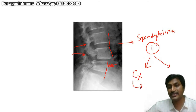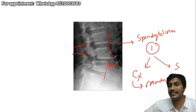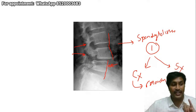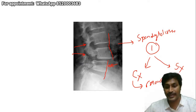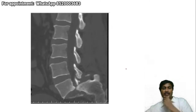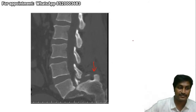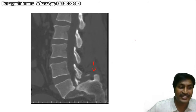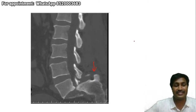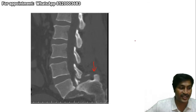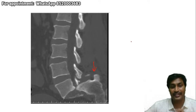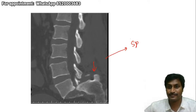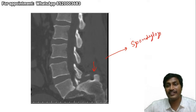For spondylolysis and spondylolisthesis grade 1, if the patient is minimally symptomatic and physiotherapy with a lumbosacral belt is working, continue conservative management for up to six months. If conservative management fails, surgery is required. Spondylolisthesis grade 1 is majority managed by physiotherapy alone. Grade 3, grade 4, and spondyloptosis will all definitely require surgery.